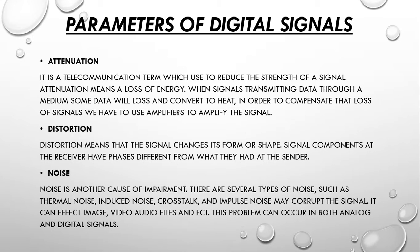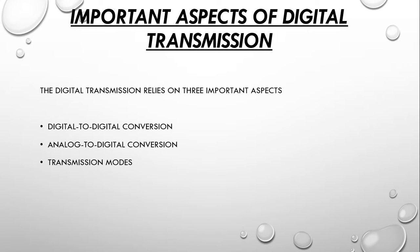Noise is another form of signal impairment. There are several types of noise: thermal noise, induced noise, crosstalk, and impulse noise, all of which may corrupt signals. Noise can affect image, video, audio files, and other data. This problem can occur in both analog and digital signals.